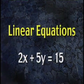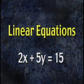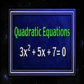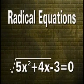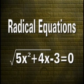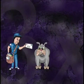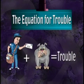First, linear equations, such as 2x plus 5y equals 15. Next, quadratic equations, such as 3x squared plus 5x plus 7 equals 0. Next, radical equations, such as the square root of the quantity 5x squared plus 4x all minus 3 equals 0. And finally, the equation for trouble, which you see here.